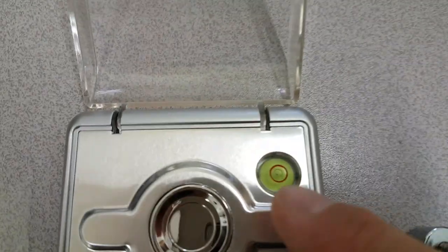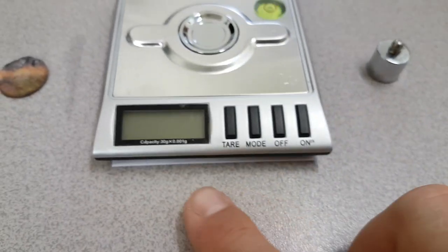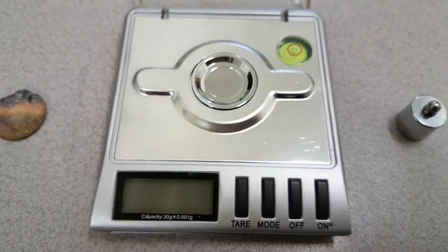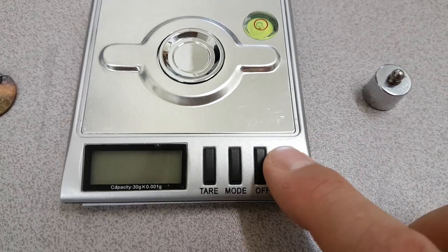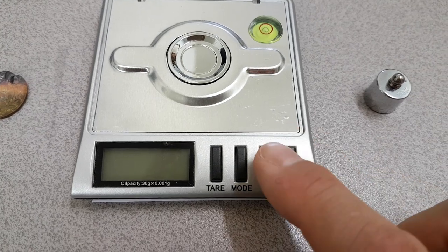We need to ensure that this bubble is level. We've done that by dropping a bit of folded paper underneath the front end here. What we're going to do is turn it on. It also turns itself off every once in a while.